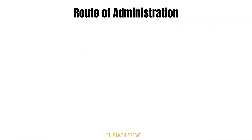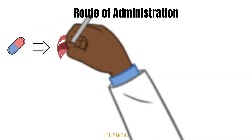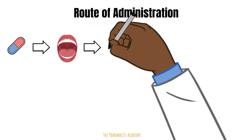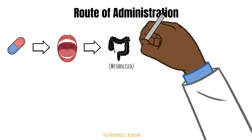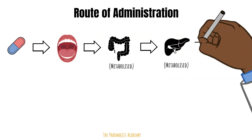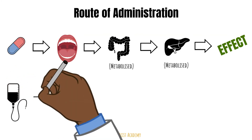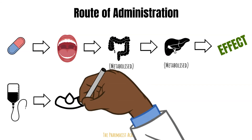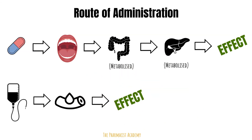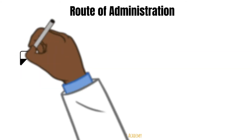The route of administration is also significant when it comes to first pass metabolism. Once you take an oral drug, you ingest it by mouth, it goes through the GI tract where it can be metabolized — so you lose some of the drug — and then it goes through the liver where it's metabolized again. Compared to intravenous medications, which go directly into the bloodstream, you can reach the site of action right away without going through first pass metabolism.